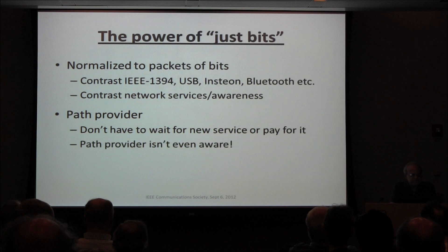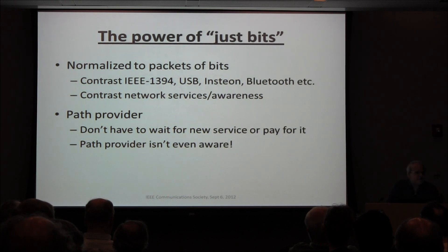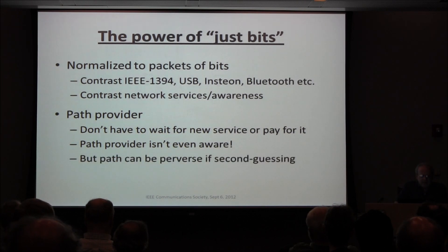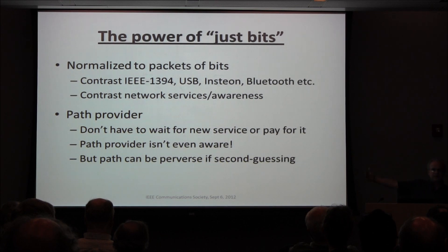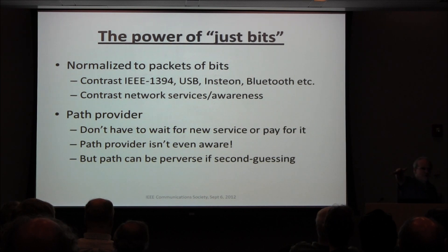We don't worry about path providers, and the path provider isn't even aware of the meaning of the bits. One example: if you say 'see me in five,' they don't know if that's an urgent 'see me in five seconds because there's a heart attack' or 'see me in five weeks, you have nothing better to do.' But the path can be perverse if it second-guesses. One of the big problems is buffer bloat — everybody knows buffering is good, but it turns out buffering is the worst thing you can do because it breaks all the protocols which try to share the medium. These are the many perverse things that happen, which are even worse when they want to monetize it and sell favors.